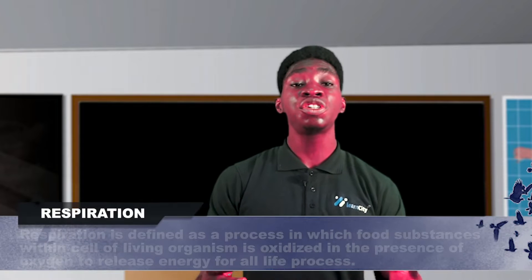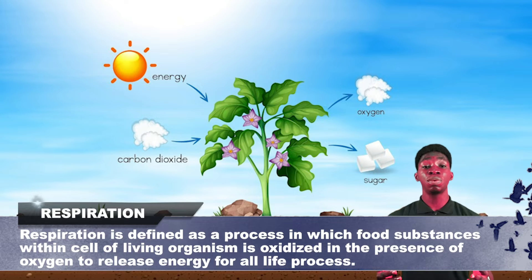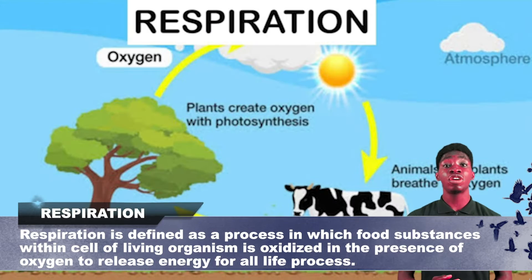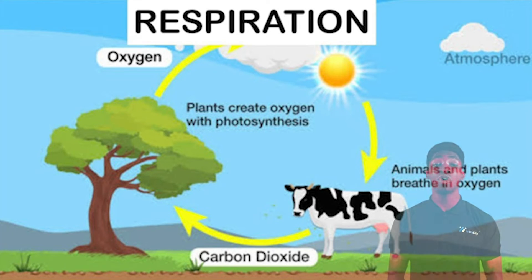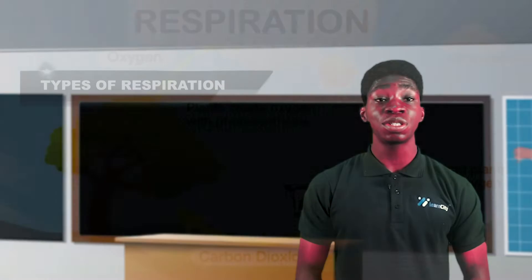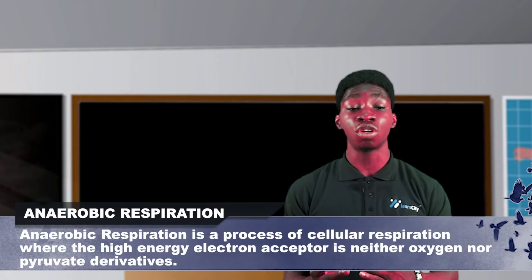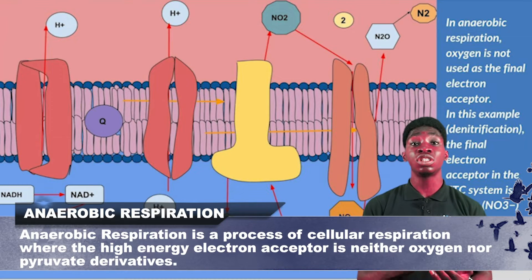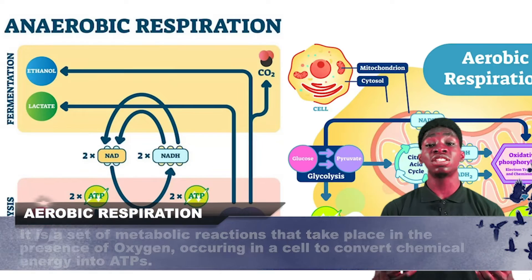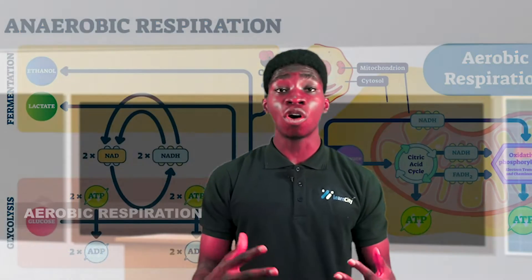Respiration is a process in which food substances within the cells of a living organism are oxidized to release energy for all life processes. Simply put, respiration is the process by which living organisms produce energy, and it's a process all living things must go through. There are two types: aerobic respiration, which occurs in the presence of oxygen, and anaerobic respiration, which doesn't require oxygen to occur.